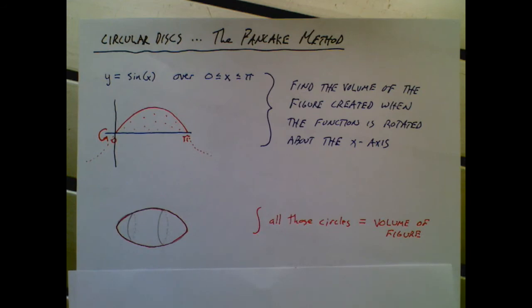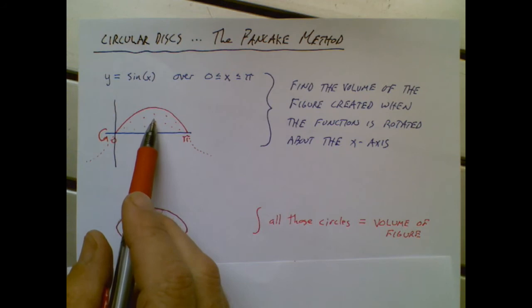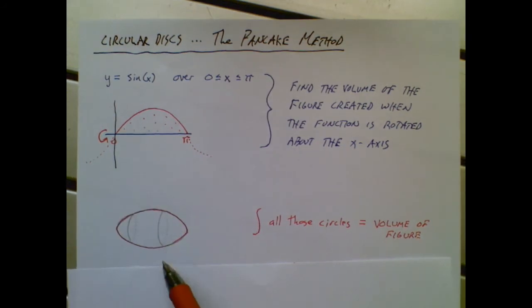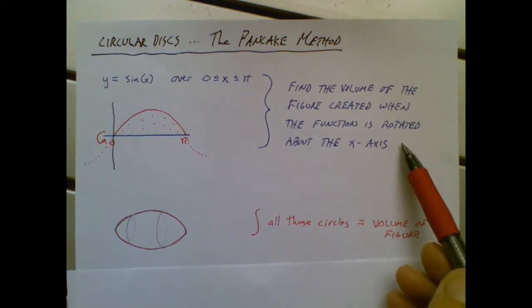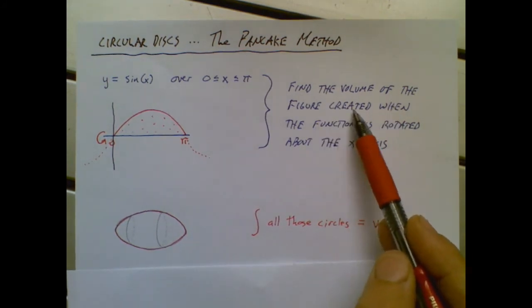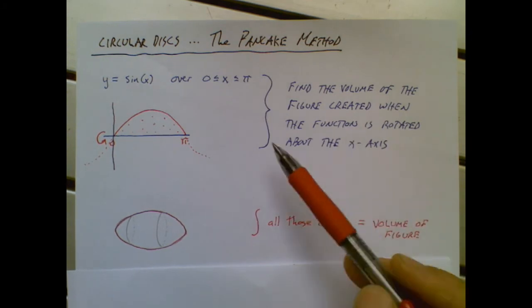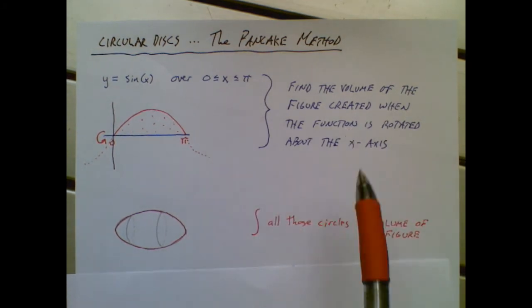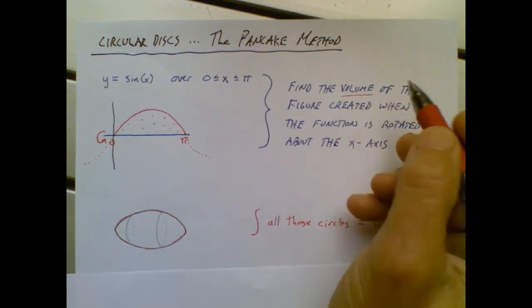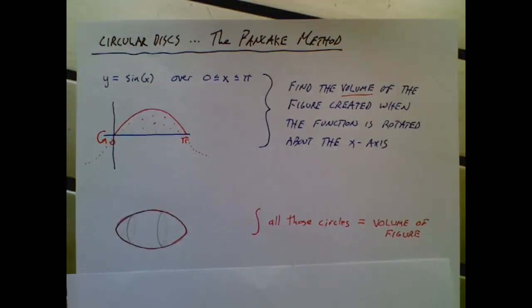So I chose sine of x because I think that figure rotated around would look kind of like a football, three-dimensional football. Our job is to not find the area of this region, but to find the volume of this football. The problems would be stated something like this: Find the volume of the figure created when the function is rotated about the x-axis. You read that, you realize we're looking for volume. So now you need a three-dimensional figure.